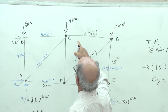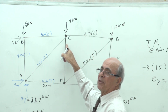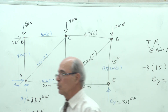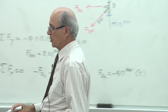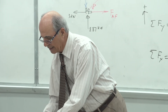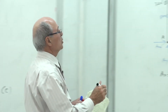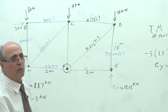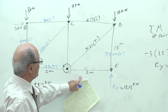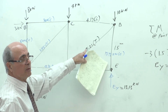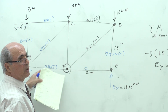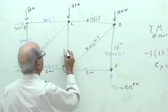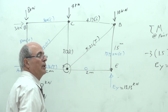From here, go to joint F or joint C — both are acceptable. If you go to joint F: FAF is known (4.16 kN tension), FEF is zero, FDF is 5.21 kN tension, and FAF goes away from the joint. Solving gives the remaining member FC = 3.13 kN in compression.